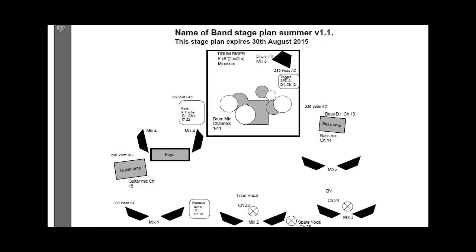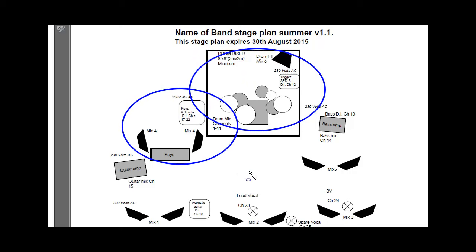Here is a professional stage plan that goes with the input list we've seen previously. As you can see, it very clearly shows where everything is on stage, with numbers that relate directly to the numbers on the input list. The house engineer can use this to plug everything up and make sure it all works before we start the sound check.